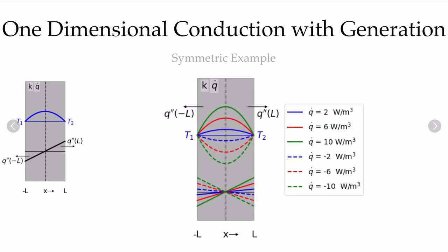Summarizing the symmetric examples, I changed the generation rate from 2 up to 10 watts per meter cubed. As volumetric generation increases, the maximum temperature gets larger and the heat flux out at the boundaries gets steeper — more energy generated inside requires a higher heat flux out to conserve energy. Using a negative generation value, shown with dashed lines, reverses the direction of the heat flux vectors. The heat fluxes for negative generation point inward, opposite to the positive generation case, with the highest-generation case showing the largest magnitude flux.